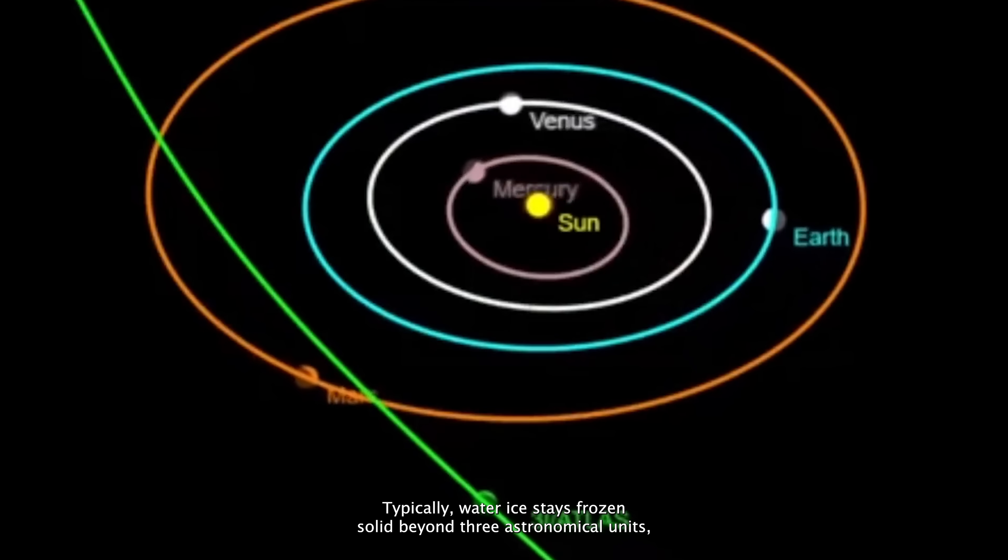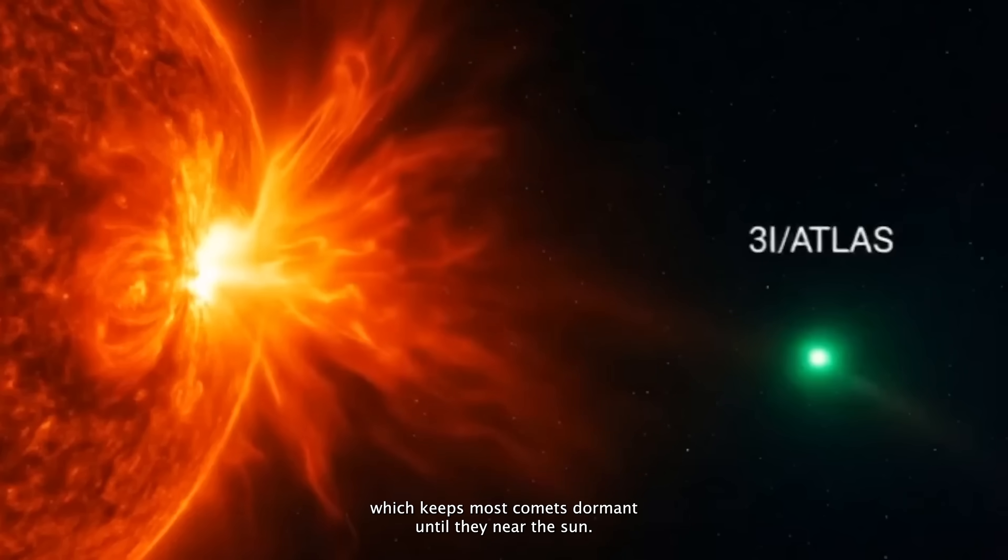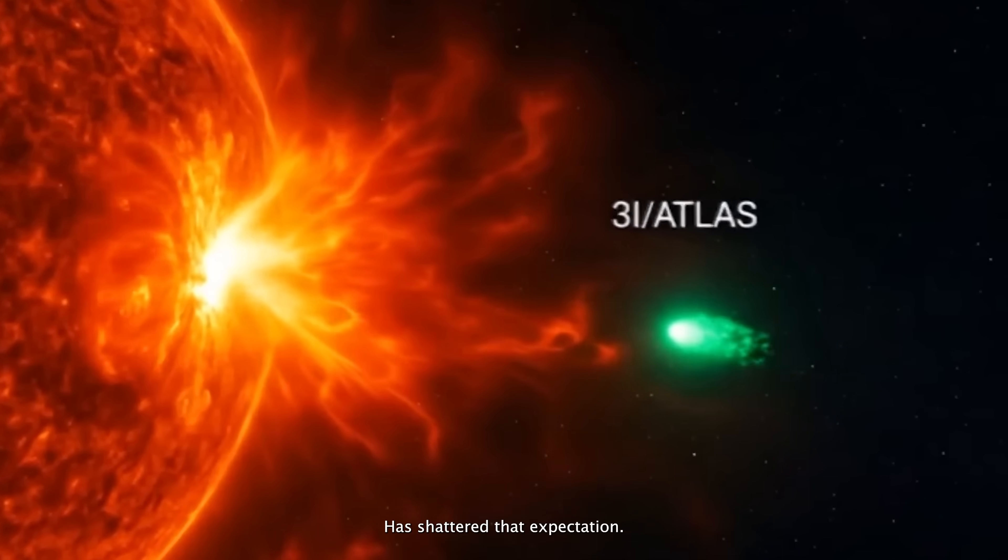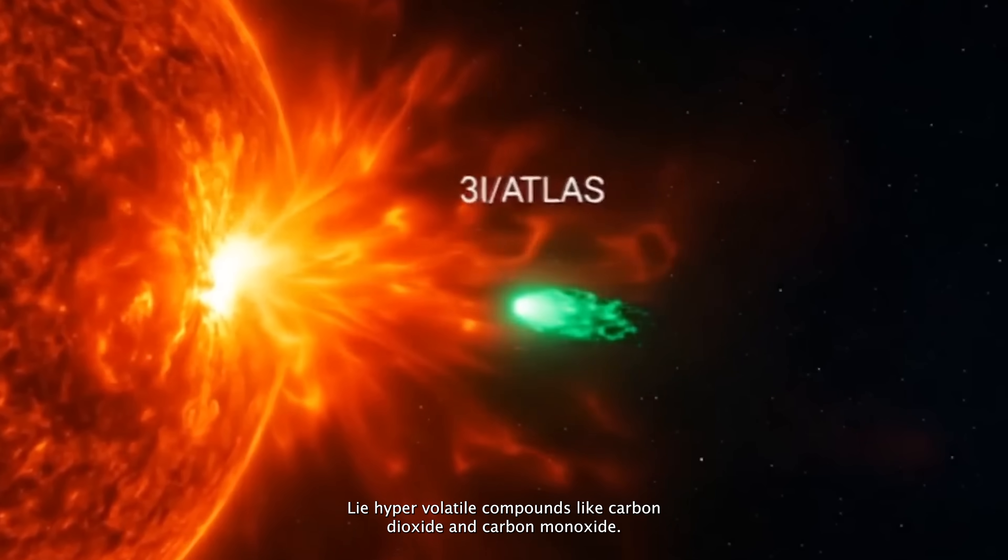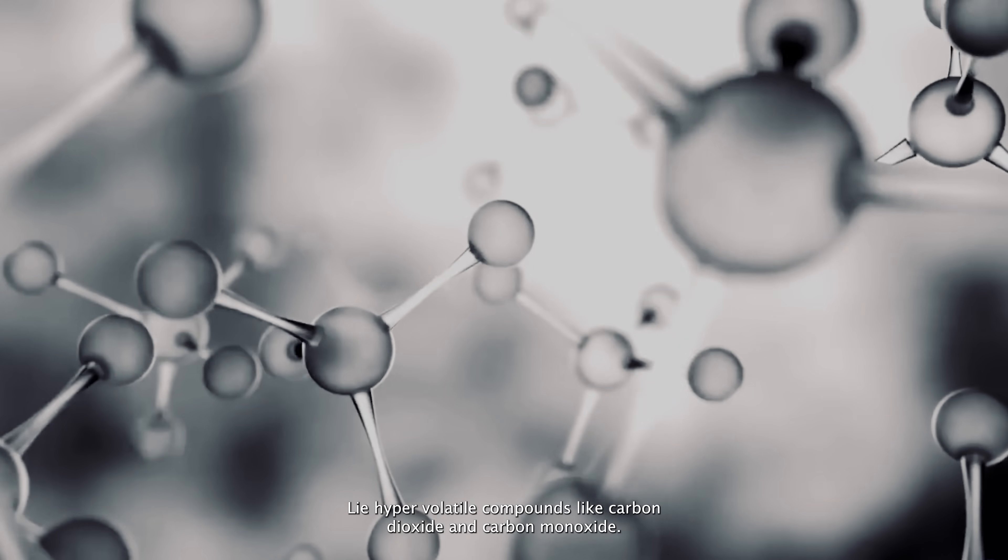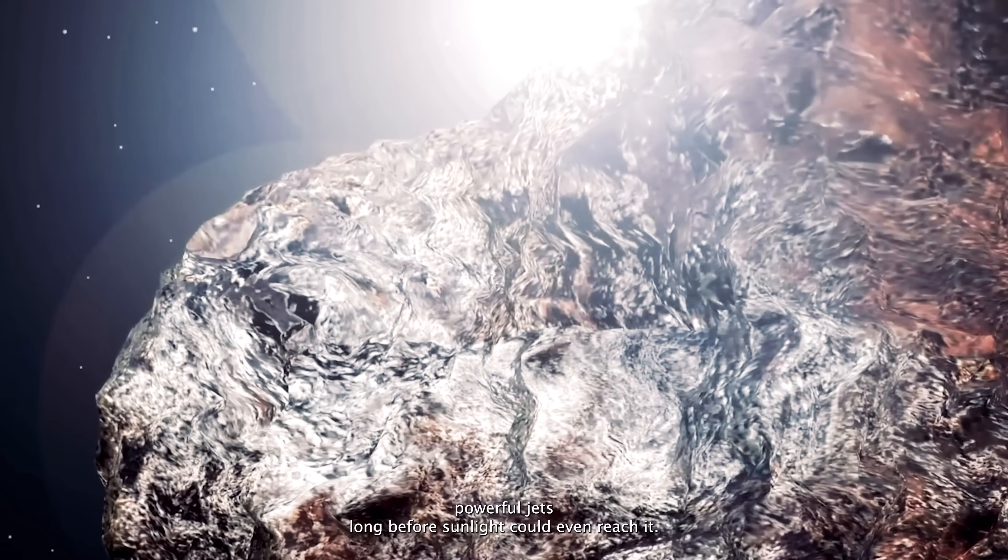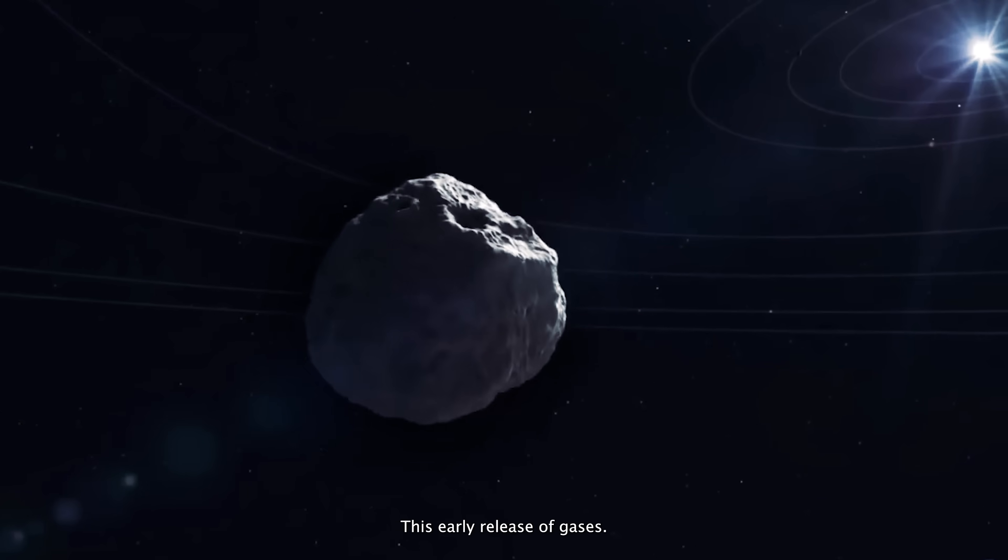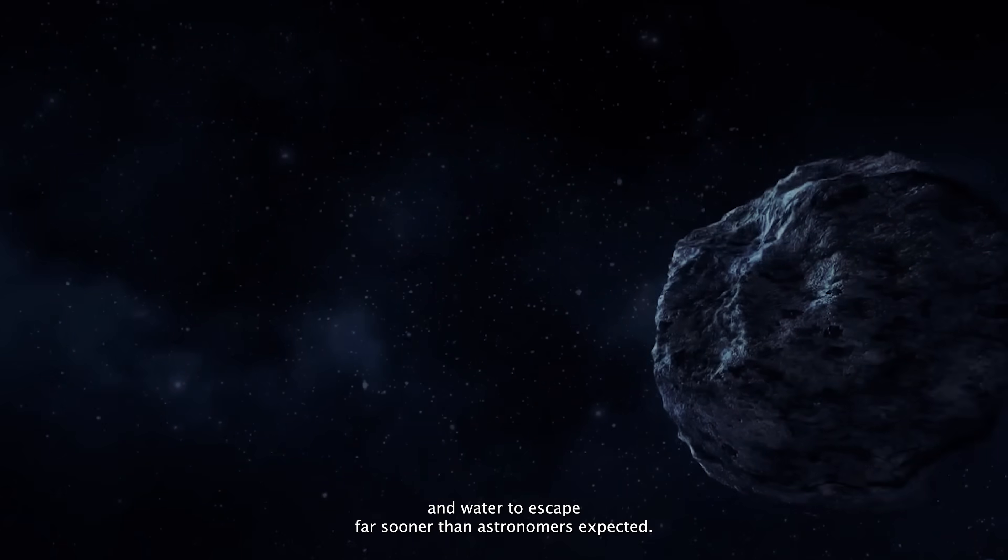Typically, water ice stays frozen solid beyond three astronomical units, which keeps most comets dormant until they near the Sun. But 3i Atlas has shattered that expectation. The best explanation so far? Deep beneath its crust lie hypervolatile compounds like carbon dioxide and carbon monoxide. As these gases warmed, they built up internal pressure, cracking the comet's surface and releasing powerful jets long before sunlight could even reach it. This early release of gases allowed both volatile compounds and water to escape far sooner than astronomers expected.